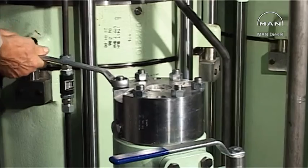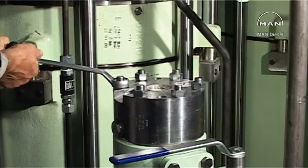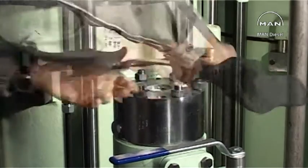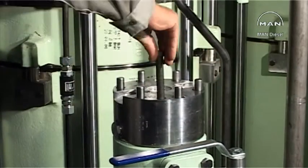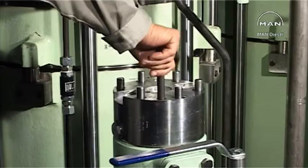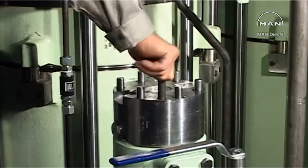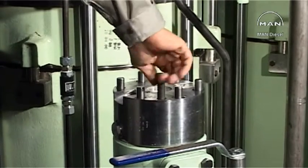Remove the top cover fixing nuts. Loosen the top cover by means of the two dismantling screws from the tool panel.